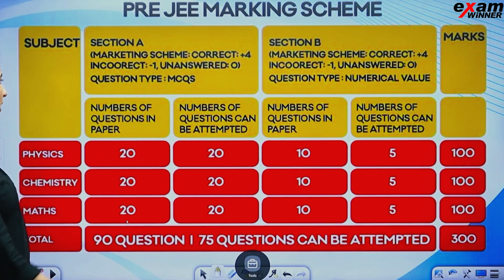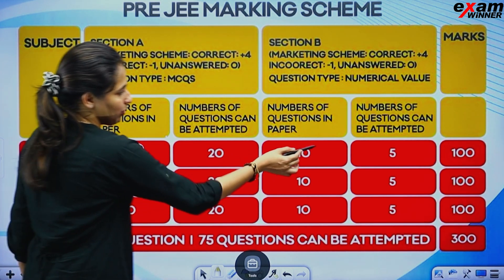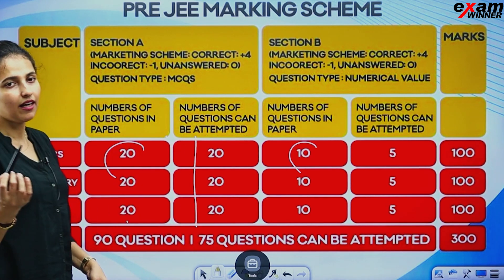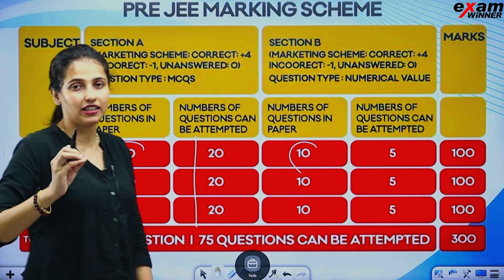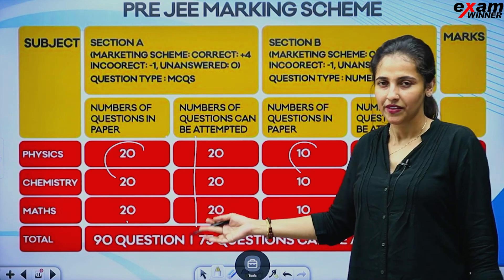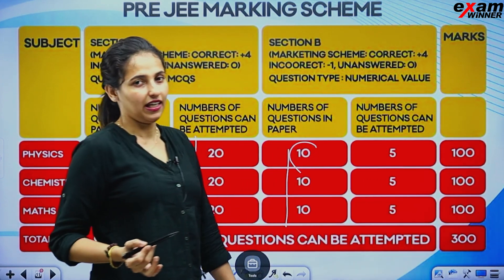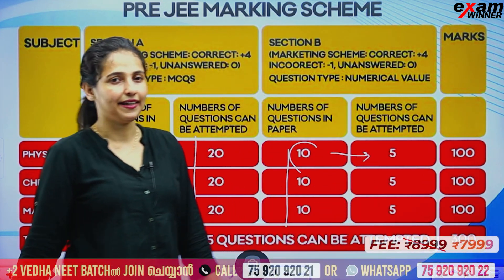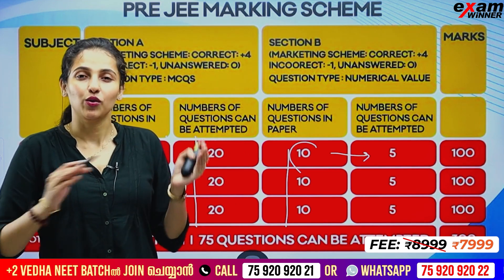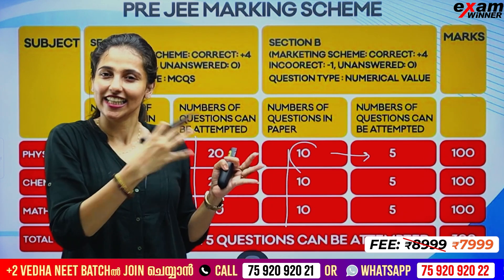In the JEE marking scheme, there is Section A and Section B. In Section A, you will attempt all questions — 20 questions compulsory. In Section B, you have 10 questions but you attempt only 5. If you get 4 marks per question correct, there is a minus 1 negative marking.